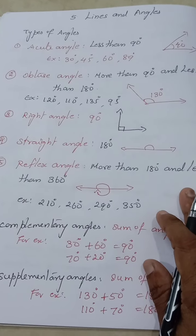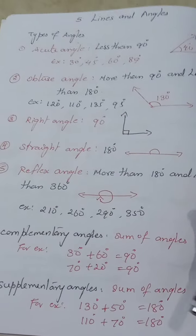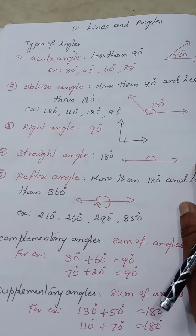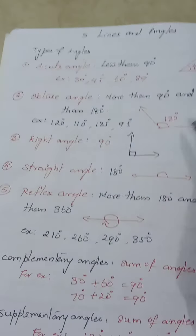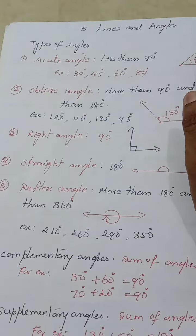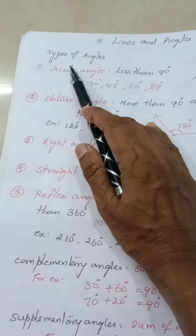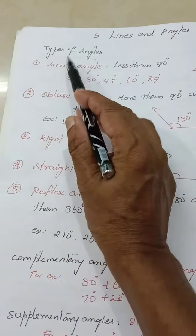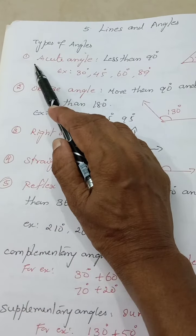Hello viewers, welcome to Showbiz Math Corner. Today we are going to see NCERT Class 7th, 5th chapter: Lines and Angles. First, let us see what are the types of angles.